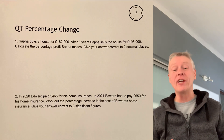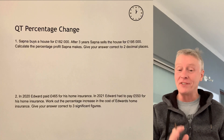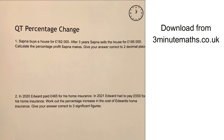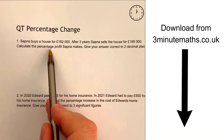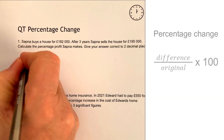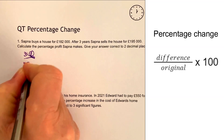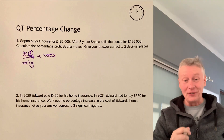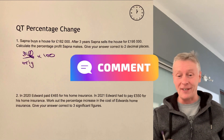In this video, we're going to be looking at percentage change. This is around about grade three. Please do download the worksheet and have a go at the questions. The main equation that you need to remember is difference over original multiplied by 100. That will give you your percentage change.